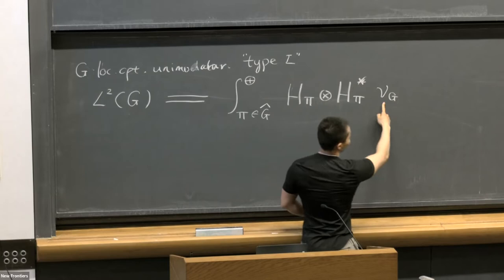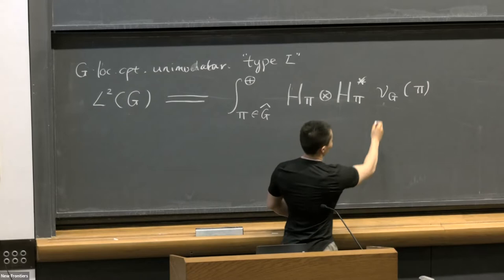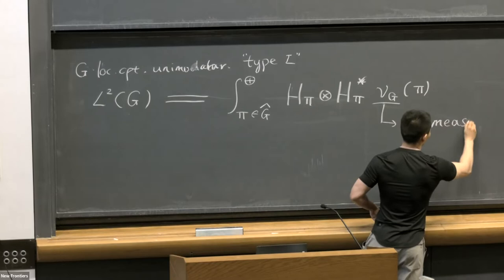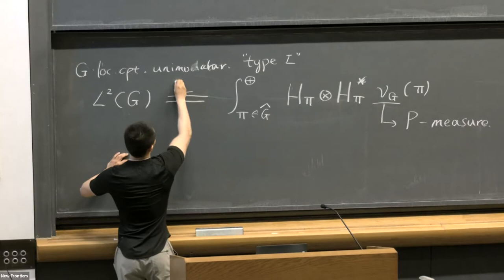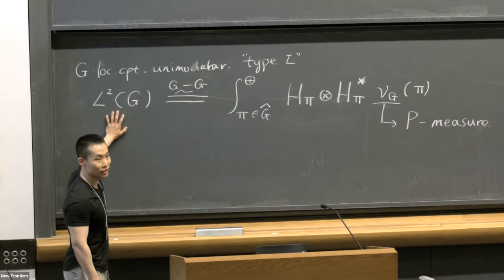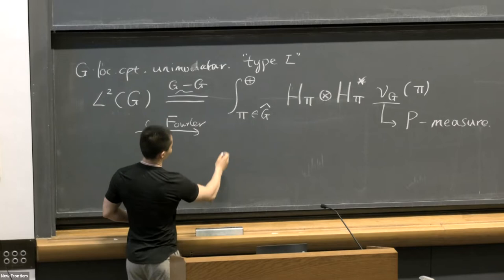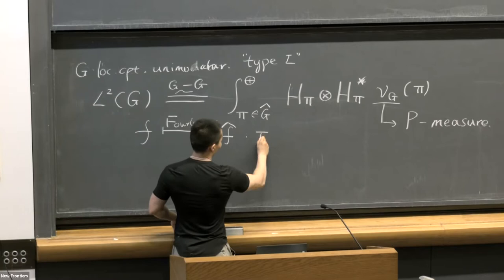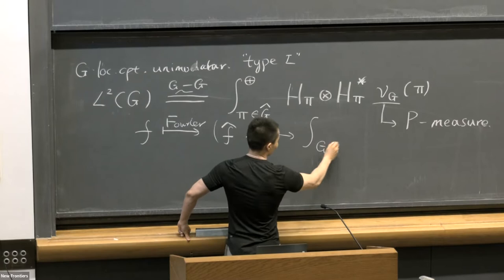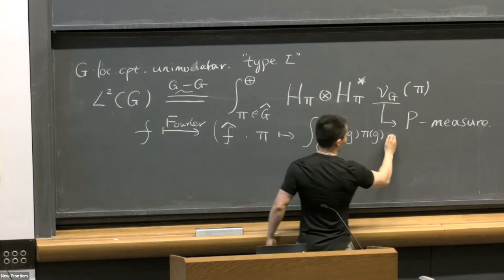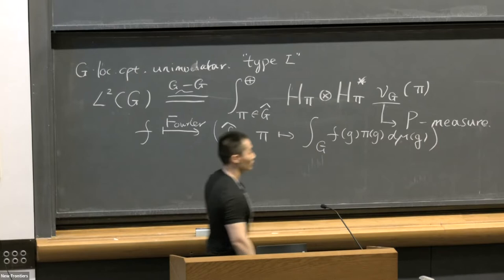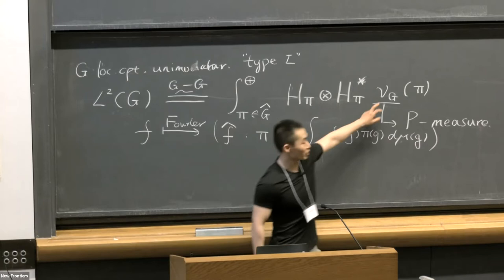It's also isomorphic to a direct integral over G hat of H_pi tensor H_pi with respect to a measure on G hat—that is the Plancherel measure. This isomorphism is in the category of G-G bimodules because we have the two regular representations on the left-hand side. How can we get that isomorphism? That is nothing but the Fourier transform, which sends pi to an integral over G of pi(g) f(g) with respect to the Haar measure.